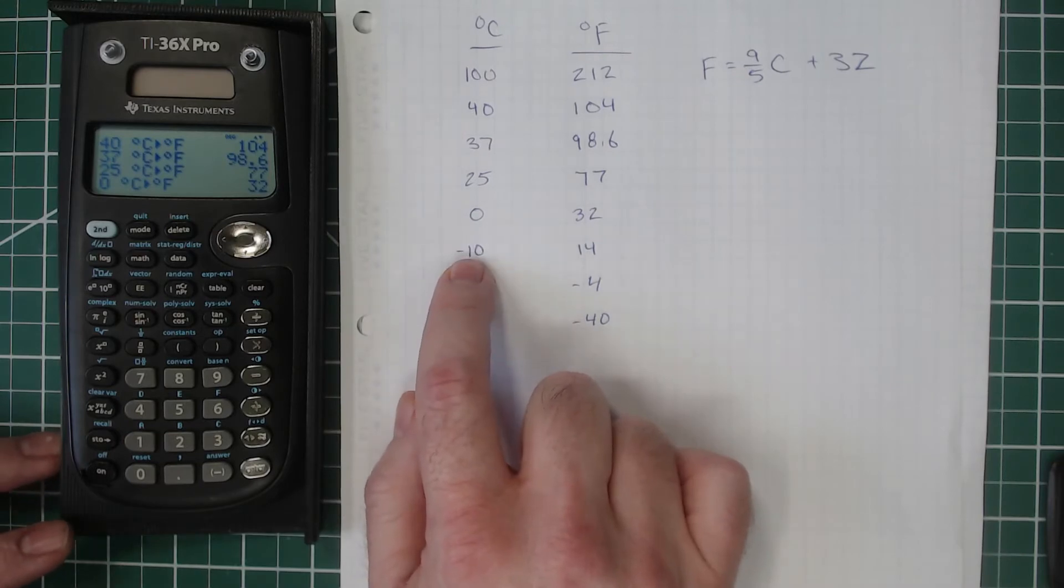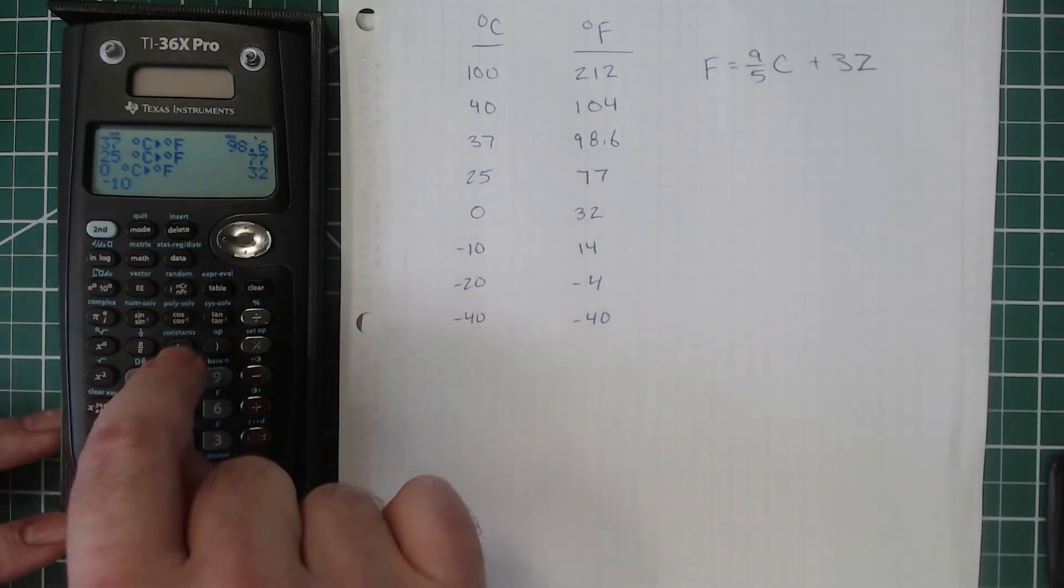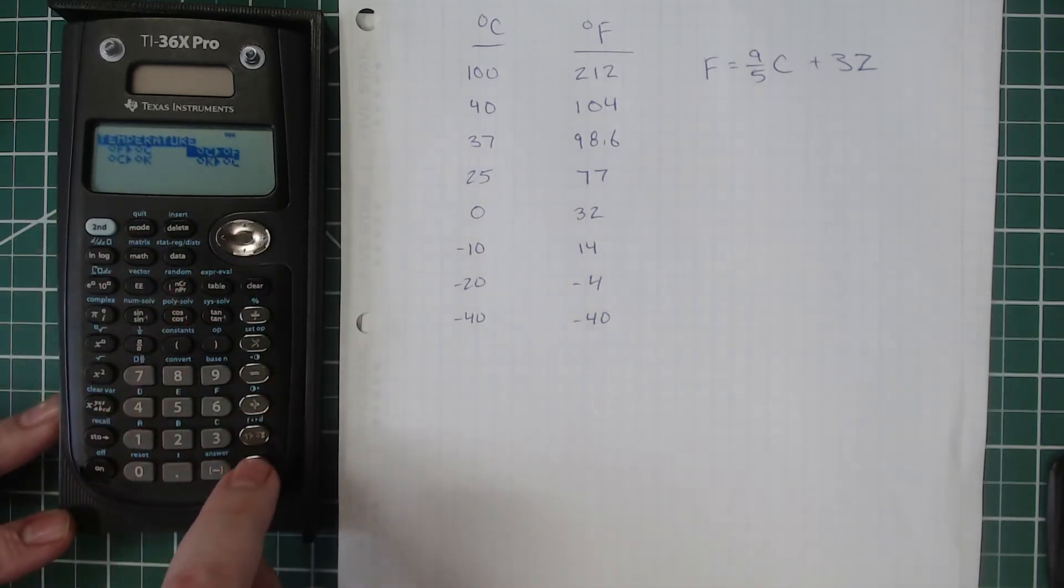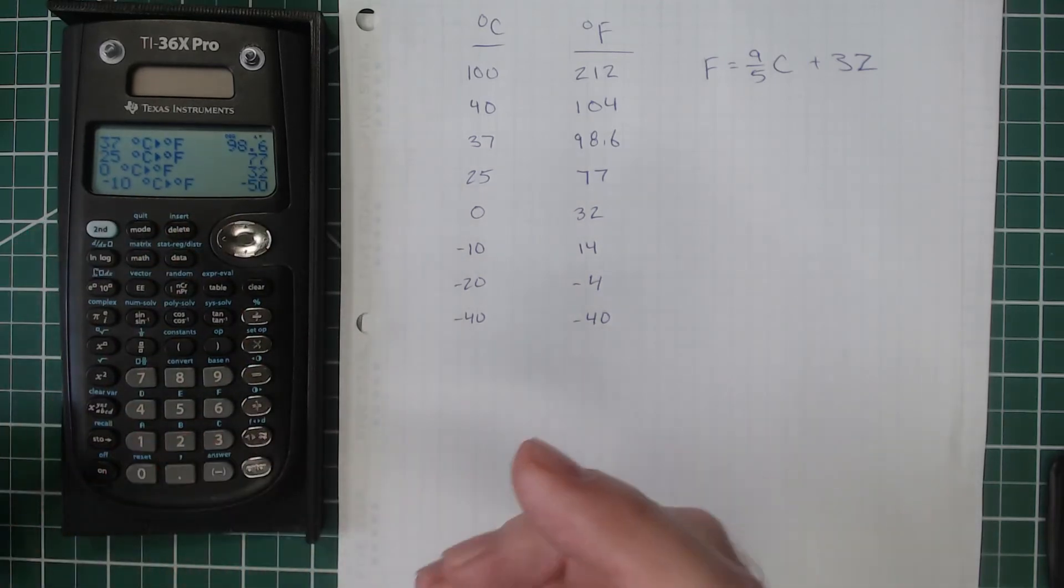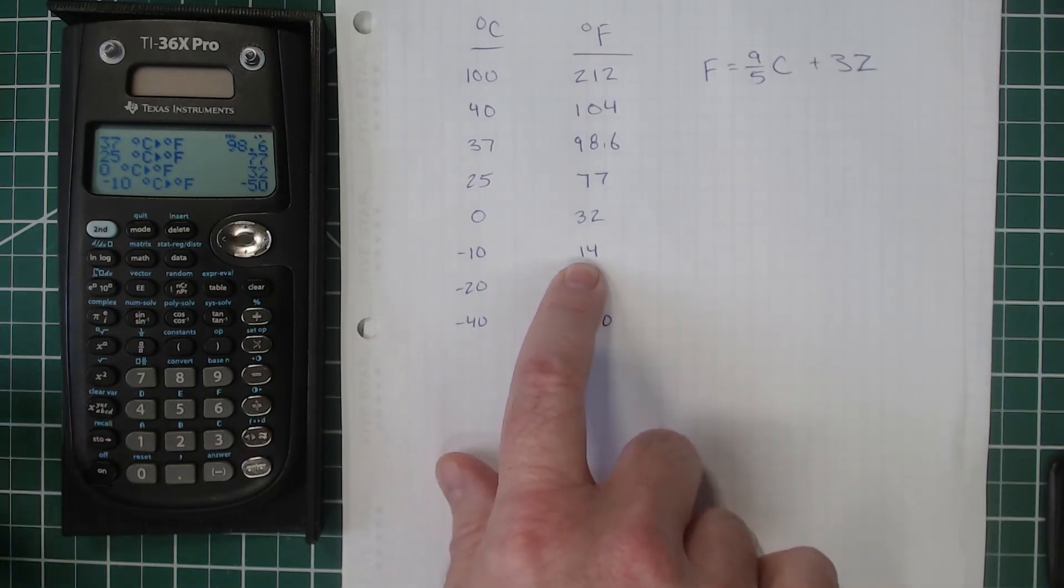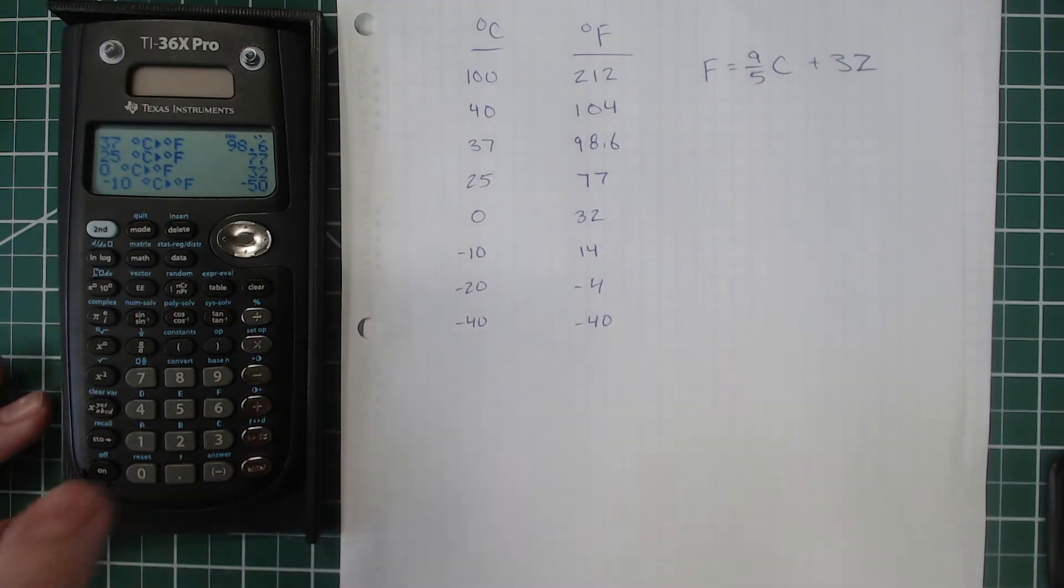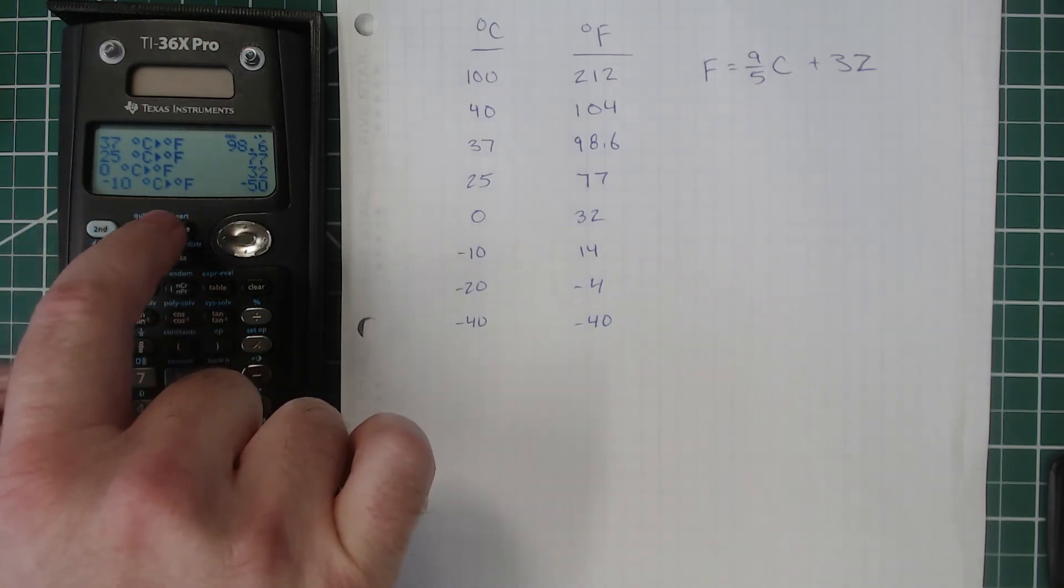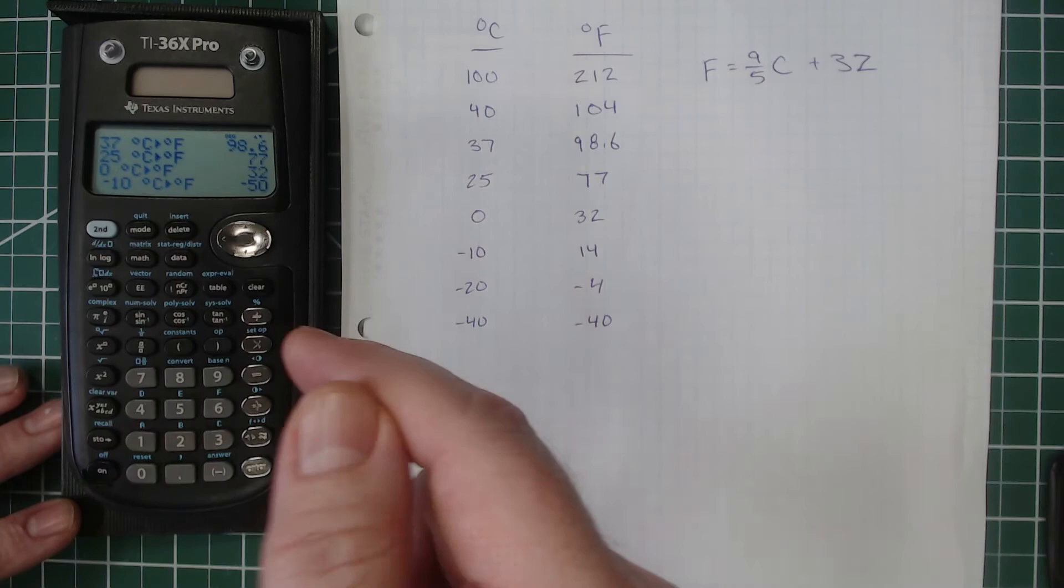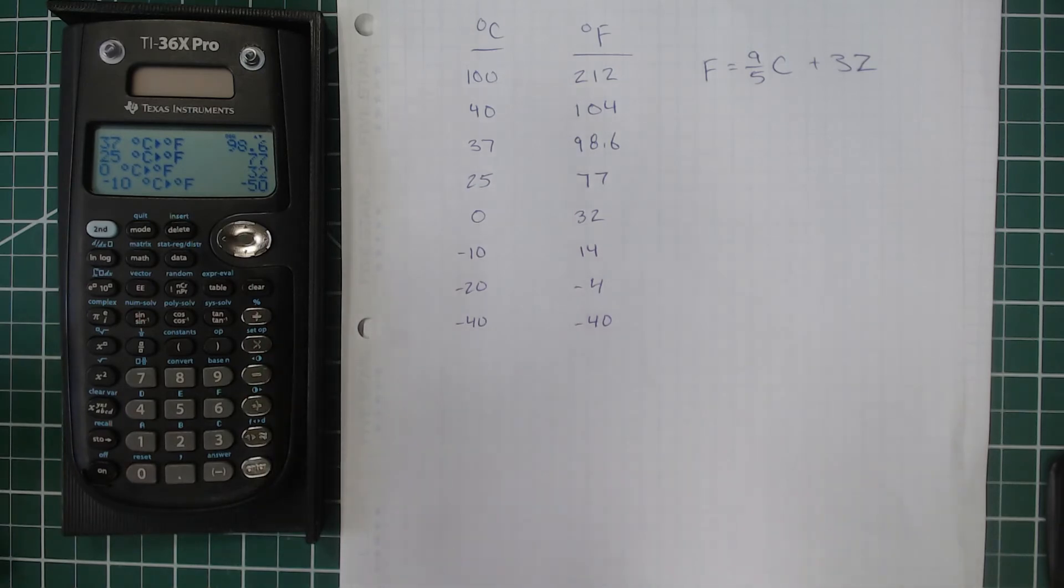Here's where the trouble was, is when we get to the negative numbers. So if we type in -10, second, convert, choose that menu item. We've got the function set up for negative 10. We hit enter. We clearly don't get the correct answer. We should get 14, not -50. Now, just looking at this, it's easy to figure out what the calculator is doing. The calculator is taking 10 degrees Celsius, converting it into Fahrenheit, and then making it negative. So 10 degrees Celsius comes out to 50 degrees Fahrenheit. But -10 is not -50. That's not how that works.